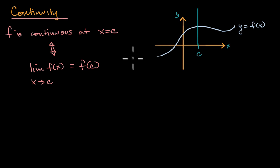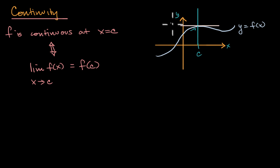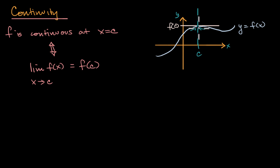Let's think about this formal definition. The limit as x approaches c from the left looks like it is approaching f(c). And as we approach from the right, it also looks like it's approaching f(c). We are defined right at x equals c, and it is the value we are approaching from both the left and the right. So this seems good — the formal definition confirms continuity in this scenario.